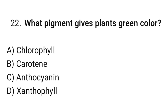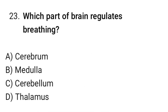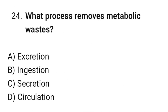Question number 22: What pigment gives plants their green color? The correct option is A — Chlorophyll. Question number 23: Which part of the brain regulates breathing? The correct option is B — Medulla. Question number 24: What process removes metabolic waste? The correct option is A — Excretion.